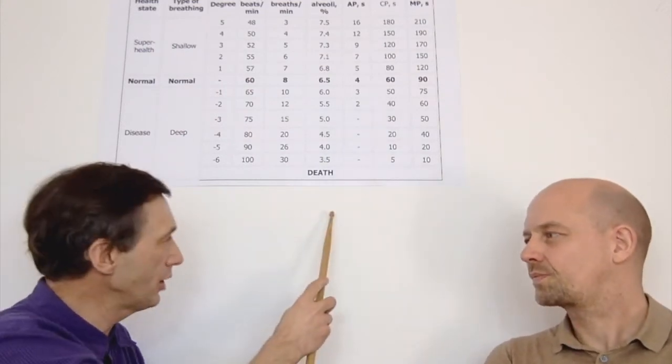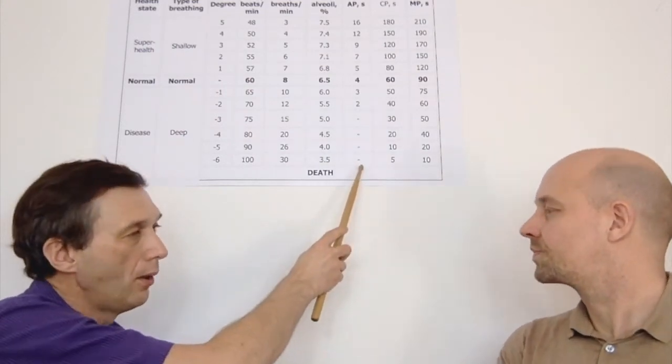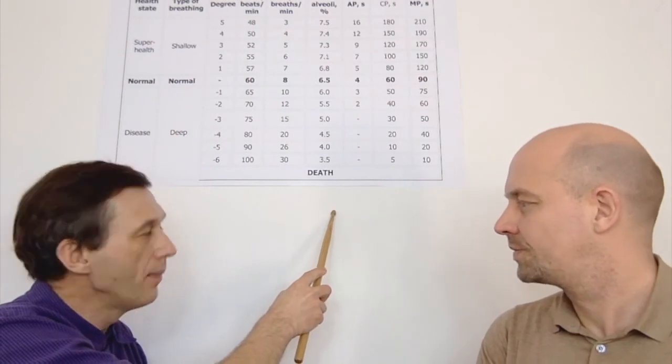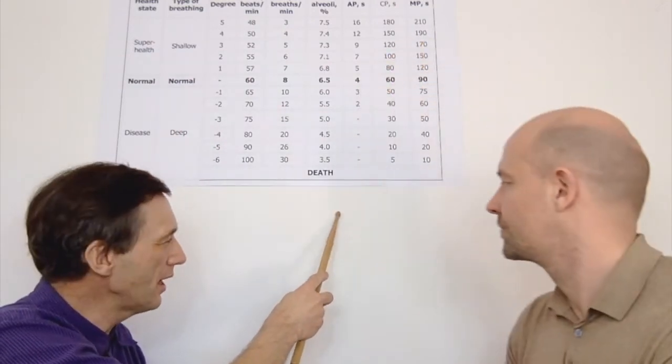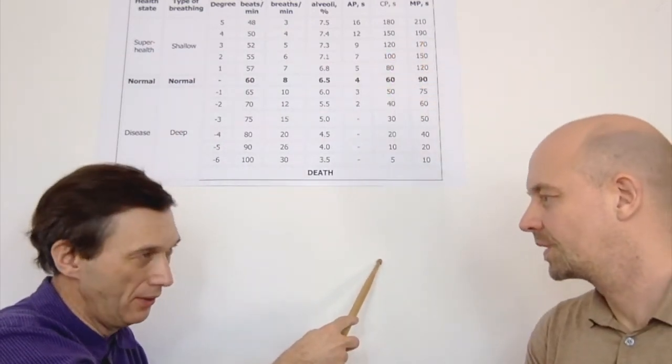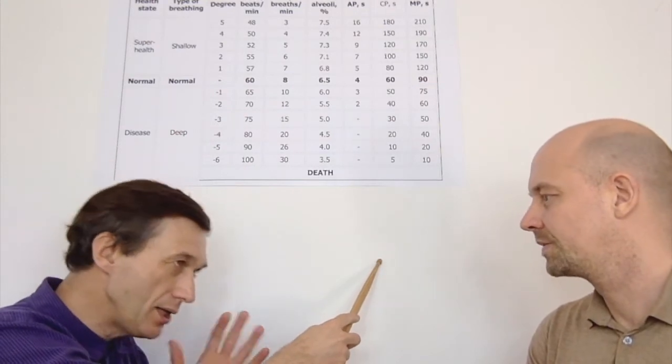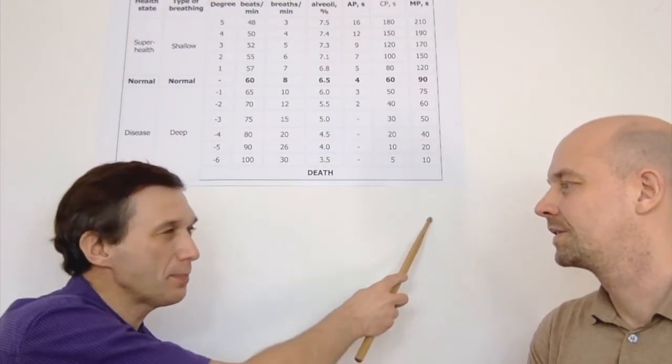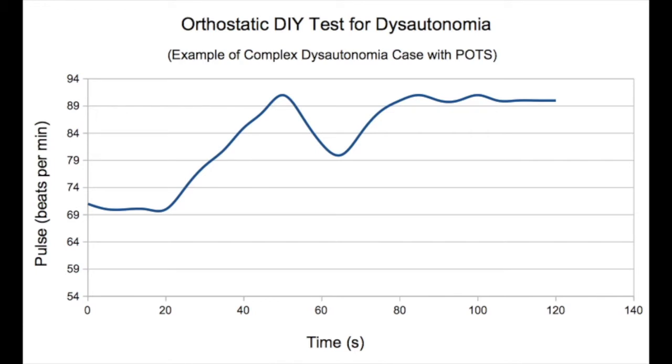But in case of complex dysautonomia, the heart rate can go up to 90, but then what happens: heart rate drops to 80, due to parasympathetic disbalance, and then it rises back up to 90. We have both problems with that. It's kind of overshoot, but it goes down.